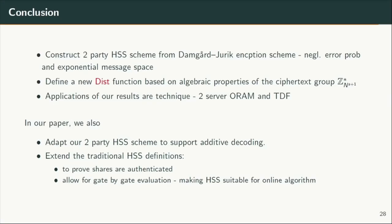To conclude, we construct a new HSS scheme from Damgård-Jurik's encryption scheme, achieving negligible error probability and exponentially large message spaces. We define a new distance function based on the algebraic properties of the ciphertext group of Damgård-Jurik. We also give new applications: a two-server oblivious SRAM scheme and a new trapdoor hash function. A few things from the paper not covered in the presentation include: a two-party HSS scheme supporting additive decoding; and extensions to the traditional HSS definitions to account for new properties, including proving shares are authenticated — so if one evaluating party is malicious, the decode algorithm can detect inconsistent shares and fail. We also extend the definition of eval to support step-by-step evaluations of the RMS circuit, making HSS suitable for online algorithms like oblivious SRAMs. Thank you.